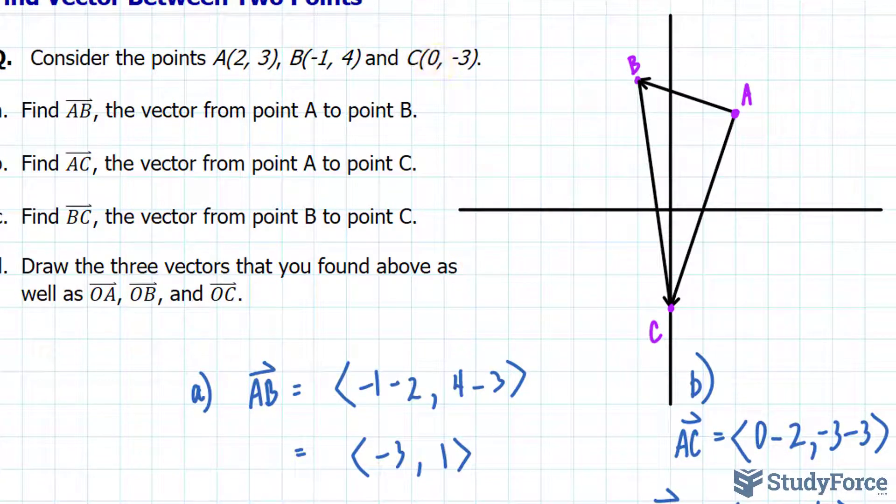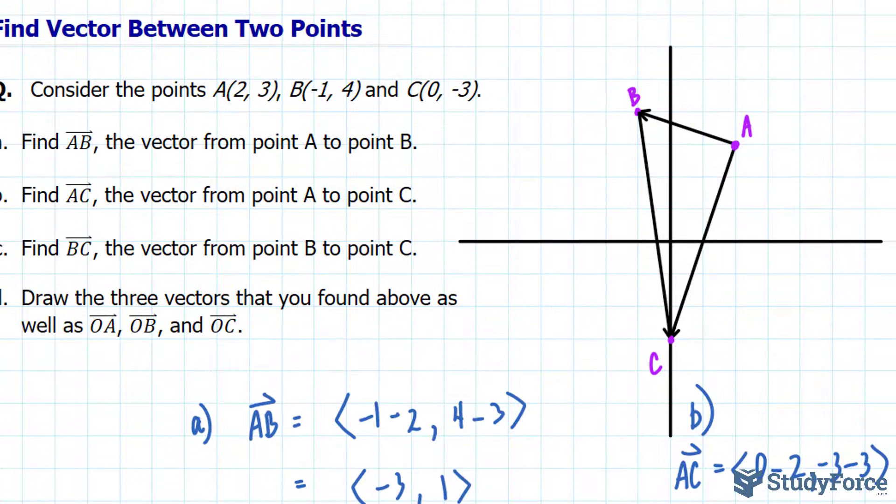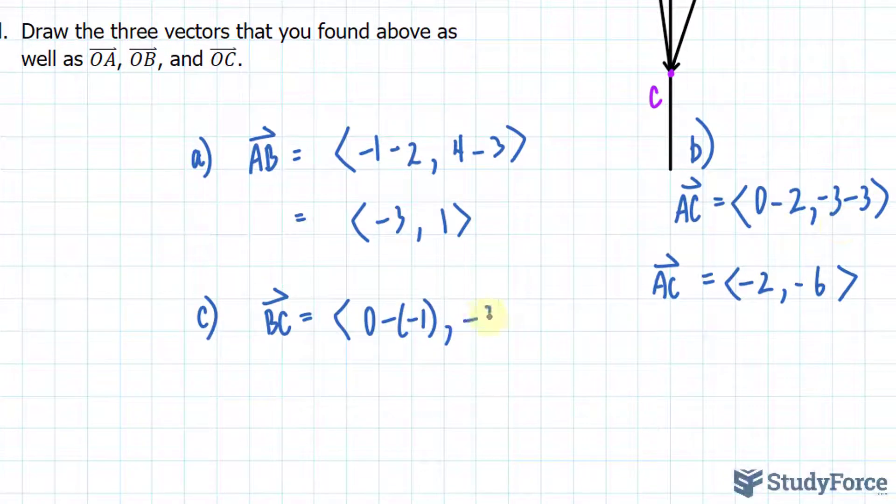Starting with the x components, 0 minus -1. And -3 minus 4. We should end up with 1 and -7.